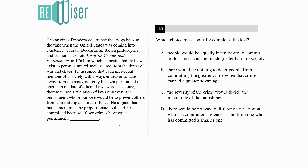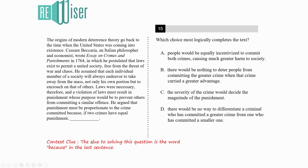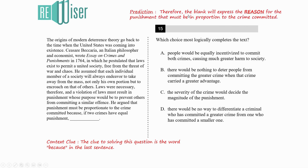We have to find which option completes the sentence. Toward the end, Beccaria argues that punishment must be appropriate to the crime, because if two crimes have equal punishment, then — blank. The key clue to solving this blank is the word 'because,' which clearly indicates what the blank has to provide: a reason for why punishment must be in proportion to the crime committed.